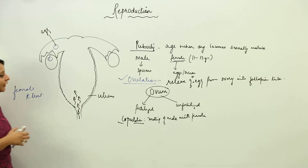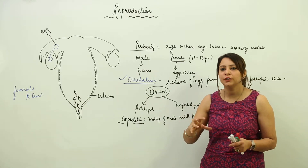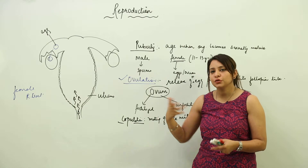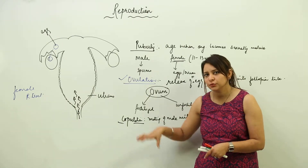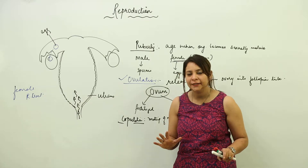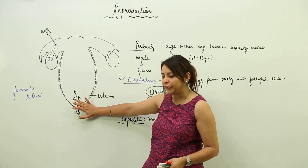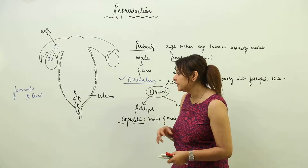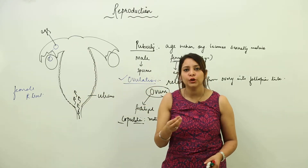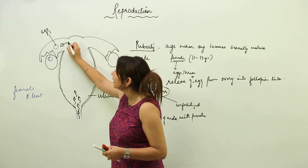Out of the billions of sperms in one ejaculation, not all survive. Some are incapable of movement or show no motility. Some are immature and not fully developed, so they die. Many sperms cannot tolerate the pH of the vaginal tract and die off. Out of all of these, only one, two, or three sperms are capable of traveling the full tract and reaching the fallopian tube.